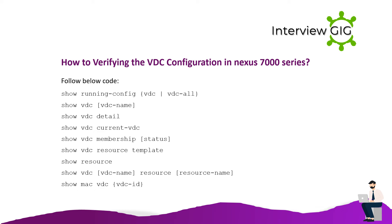How to verify VDC configuration in Nexus 7000 series? Use the following commands: show running-config vdc, vdc all, show vdc [vdc-name], show vdc detail, show vdc current-vdc, show vdc membership status, show vdc resource template, show resource, show vdc [vdc-name] resource [resource-name], and show mac vdc.